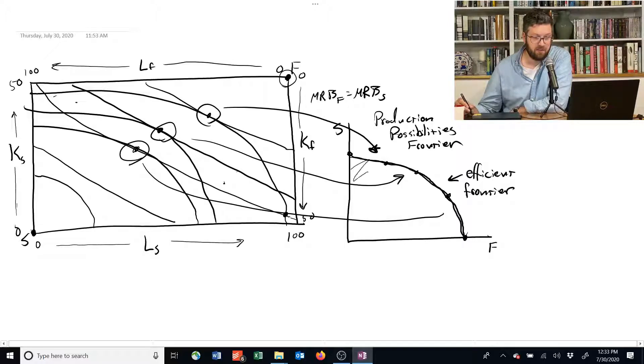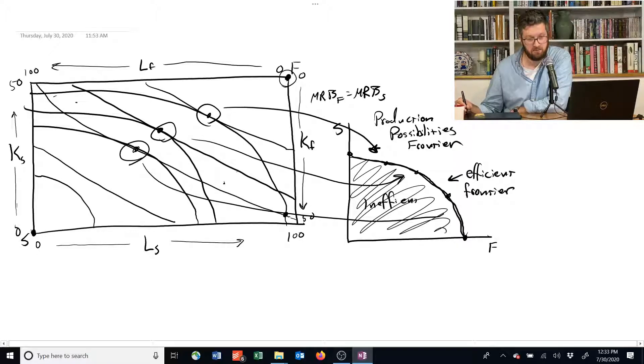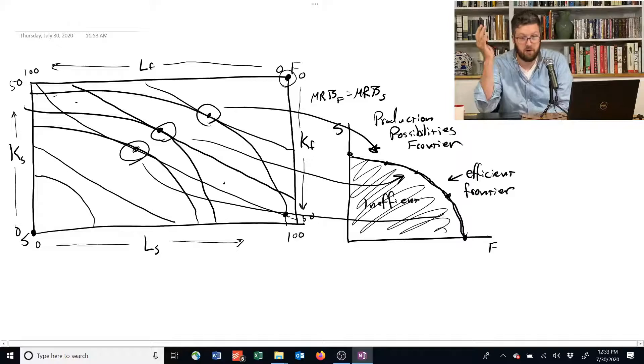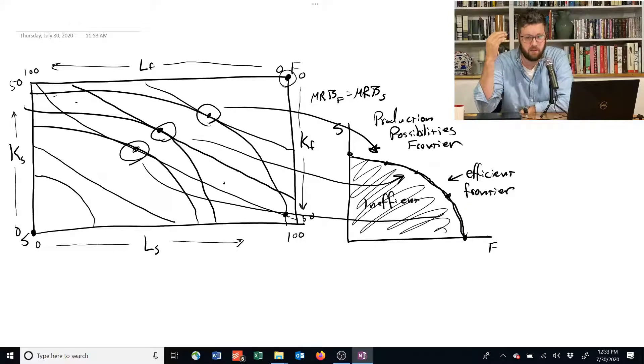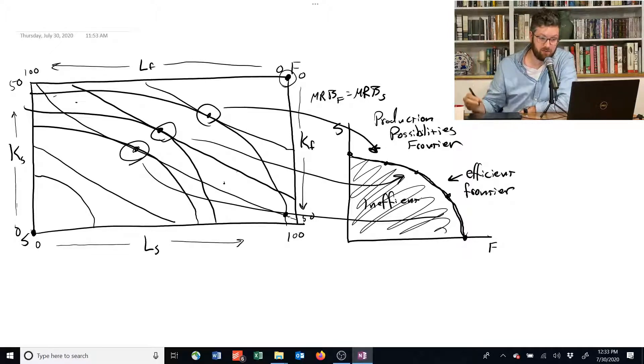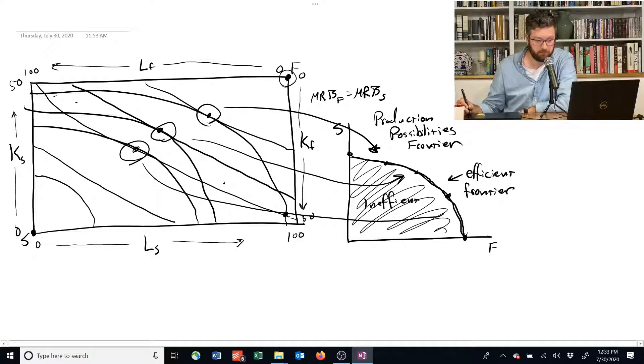Technically, everything inside is also feasible, it's just inefficient. These points inside correspond to different points in the Edgeworth box that aren't on that production contract curve. They're feasible—you can allocate resources to produce that amount of the good—but if you do that, you're being inefficient. If you're inside, then you can see that you could move over here and not have to make any tradeoffs.